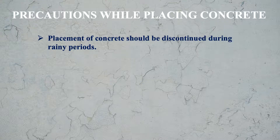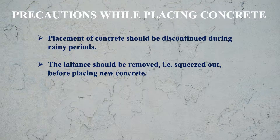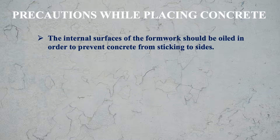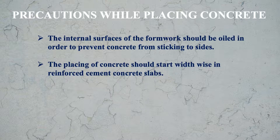Placement of concrete should be discontinued during rainy periods, because rain water will be added into the concrete and if it is raining heavily, it may wash out the cement paste from the concrete, making it useless. The laitance should be removed before placing new concrete. Concrete should be laid continuously in order to prevent the formation of irregular and unsightly lines. The internal surfaces of the formwork should be oiled in order to prevent concrete from sticking to the sides. The placing of concrete should start width-wise in reinforced cement concrete slabs.